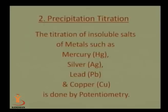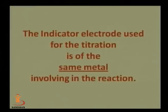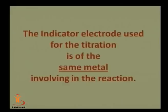In precipitation titration, titration of insoluble salts of metals such as mercury, silver, lead, and copper is done by potentiometry. The indicator electrode used for the titration is of the same metal as the solution — if silver is used, then a silver electrode; if mercury, then a mercury electrode. The same metal is used as the indicator electrode, and whatever solution is used, the same metal solution is used as the indicator.